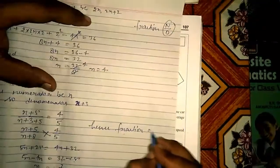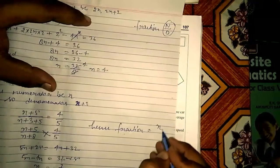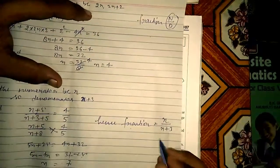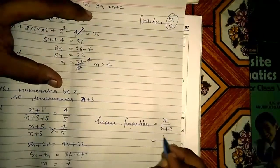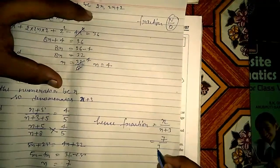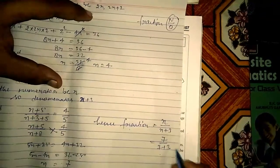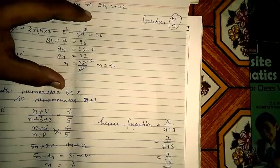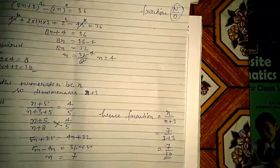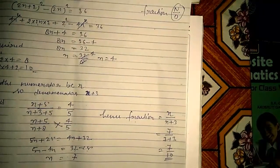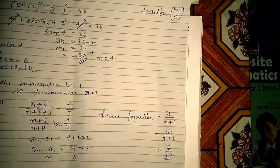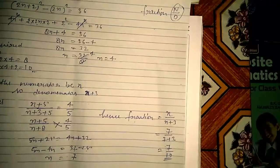Find the fraction: fraction = x/(x + 3). Putting value: 7/(7 + 3) = 7/10. So the final answer for question number 8 is 7/10.